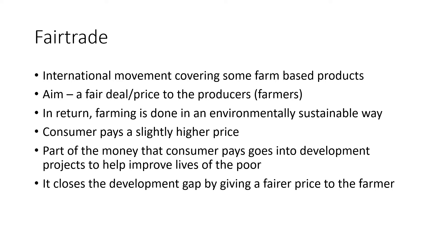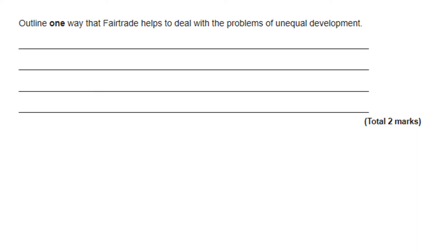So that's how Fair Trade works — more expensive for us, but it's only a small amount of money and it makes a massive difference for them. It helps close that gap. There is one question to go with this: 'Outline one way that Fair Trade helps to deal with the problems of unequal development.' Talk about us paying a higher price and how that money helps on projects for the farmers to improve people's quality of life, and therefore helps with the problem of uneven development. Have a go — spend no more than three minutes, then move on.